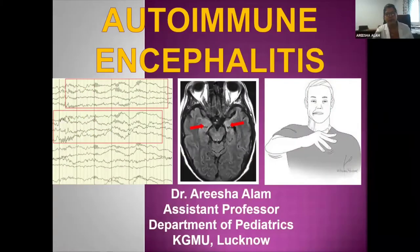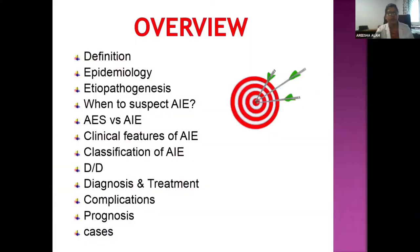Good afternoon to all of you. Today I'm going to talk about autoimmune encephalitis in children. My talk will include the definition of this syndrome, the epidemiology, pathogenesis, when to suspect autoimmune encephalitis, how it differs from common AES, clinical features, classification, differential diagnosis, diagnosis, treatment, complications, prognosis, and if time permits, a few cases to discuss.